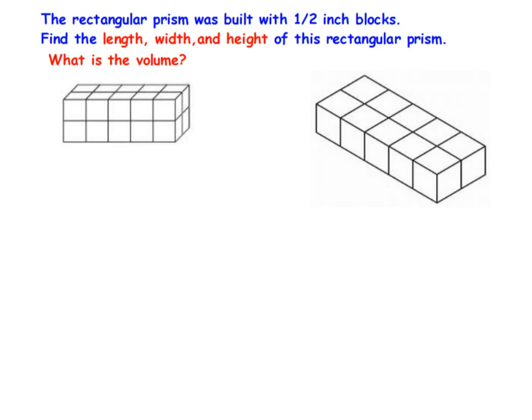So if you think about it that means every two blocks is one full inch, right? Two halves equals one whole. So that's what we need to do—figure out what these side lengths are and then use those new numbers to find the volume.